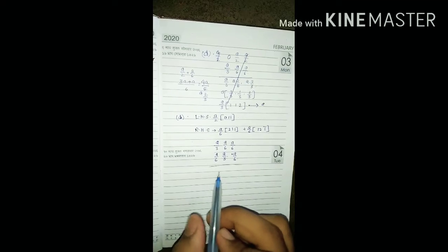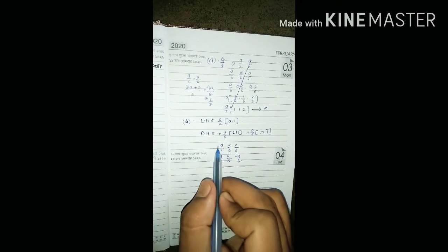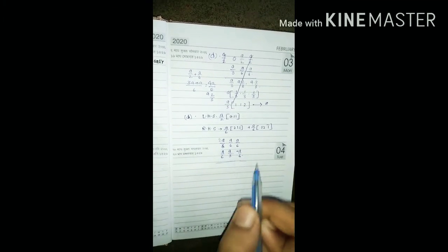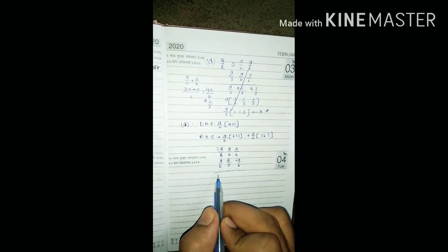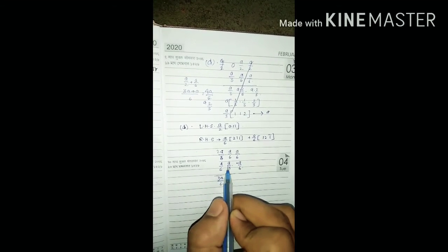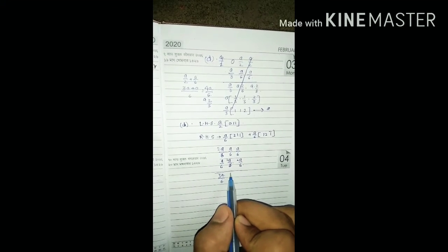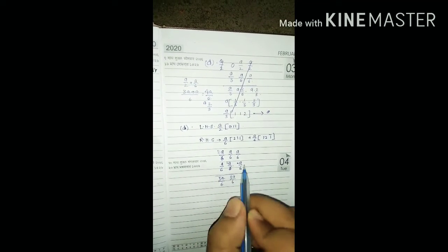We are going to calculate. What is this one? 2 a by 6, so it is 3 a by 6. This one is also 2 a by 6, so it is also 3 a by 6, and this one is 0.